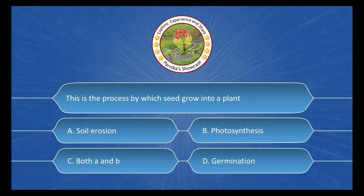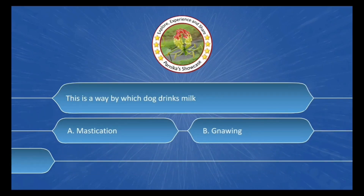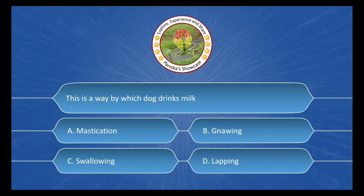Next question: This is the process by which seeds grow into a plant. The options are: A. Soil erosion, B. Photosynthesis, C. Both A and B, D. Germination. The correct answer is Option D: Germination.